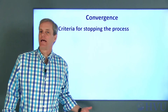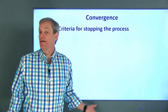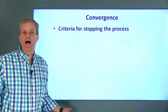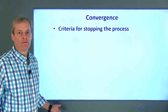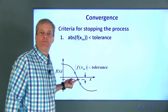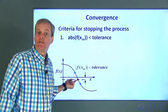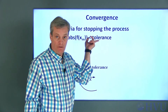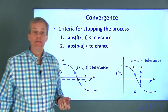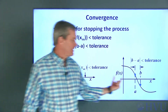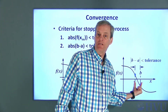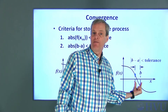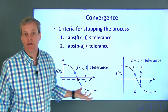Now let's decide what we mean by close enough to the actual solution. There are two common approaches: one is that the value of the function at the midpoint is close enough to zero; the other is that the range of x values in the interval is small enough so that halving the interval doesn't make a difference.